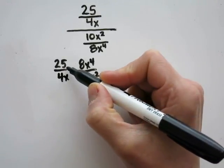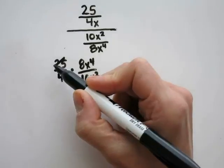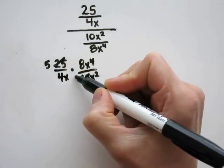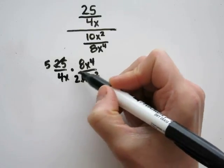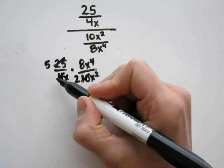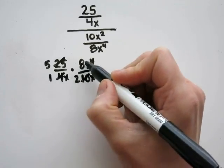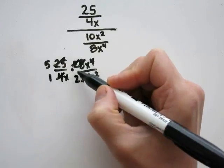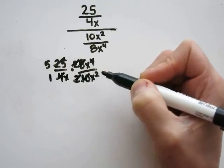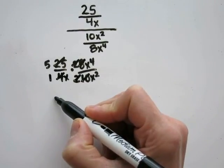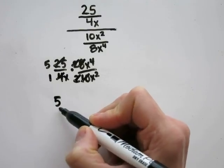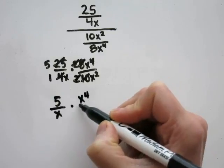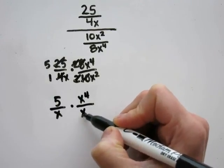10 and 25 are both divisible by 5: 25 divided by 5 is 5, and 10 divided by 5 is 2. 4 and 8 are both divisible by 4: 4 divided by 4 is 1, and 8 divided by 4 is 2. You have 2 over 2, so the 2's will cancel out. Let's rewrite what we're left with: 5 over x times x to the fourth power over x squared.